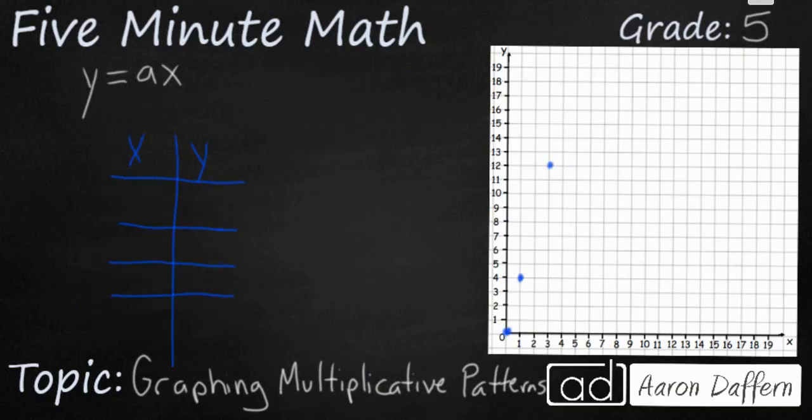Now it's time for you to try. What we have are 3 points that are plotted on our graph over here. What I'd like you to do is to go ahead and write down the x and y coordinates in the first 3 rows here.